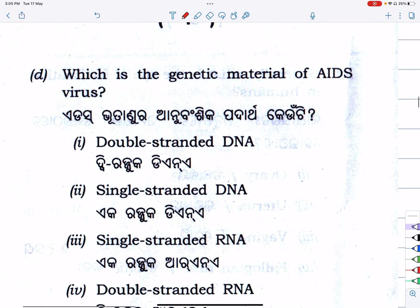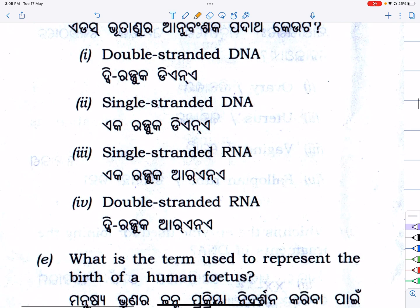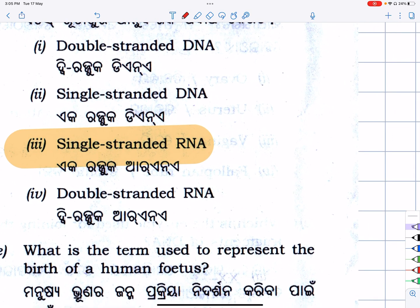Which is the genetic material of the AIDS virus? What type of genetic material? Single-stranded RNA — ss RNA — single-stranded RNA. The HIV virus has two identical copies of single-stranded RNA.